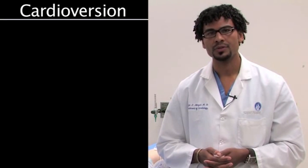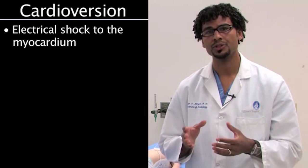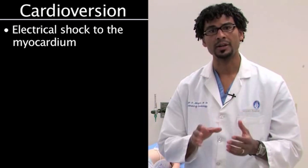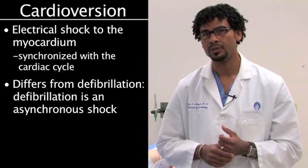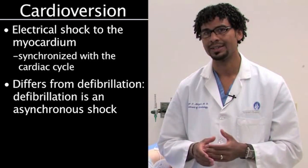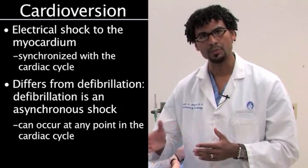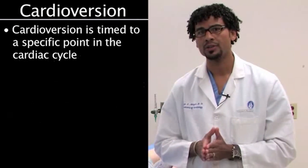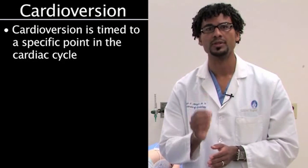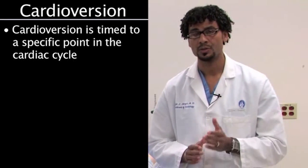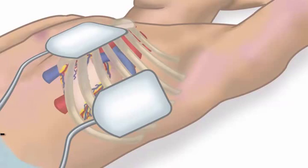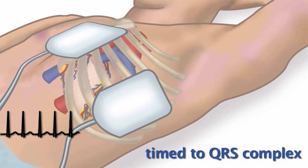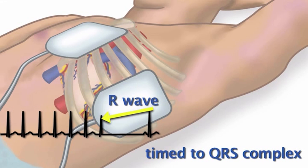Cardioversion involves the application of an electrical shock to the myocardium that is synchronized with the cardiac cycle. The way that cardioversion differs from defibrillation is that defibrillation is an asynchronous shock, meaning it can occur at any point in the cardiac cycle. Cardioversion is a shock that's timed to occur at a specific point in the cardiac cycle — specifically ventricular depolarization. You are timing your shock to coincide with the QRS complex, specifically the R wave on your EKG.